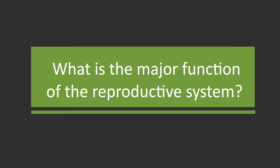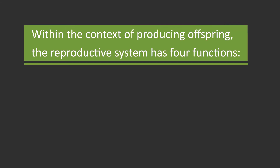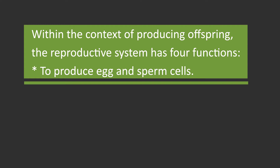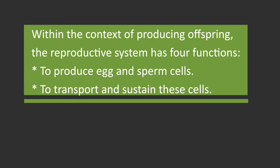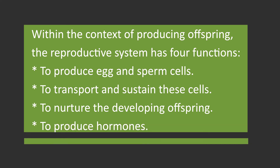What is the major function of the reproductive system? The major function of the reproductive system is to ensure the survival of the species. Within the context of producing offspring, the reproductive system has four functions: to produce egg and sperm cells, to transport and sustain these cells, to nurture the developing offspring, and to produce hormones.